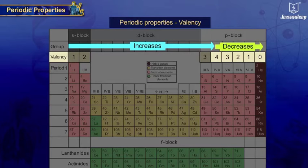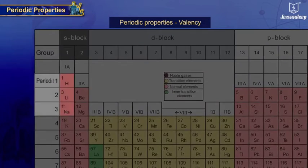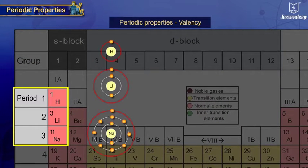Gradation of valency in a group: all elements have the same valency because of the same number of valence electrons.